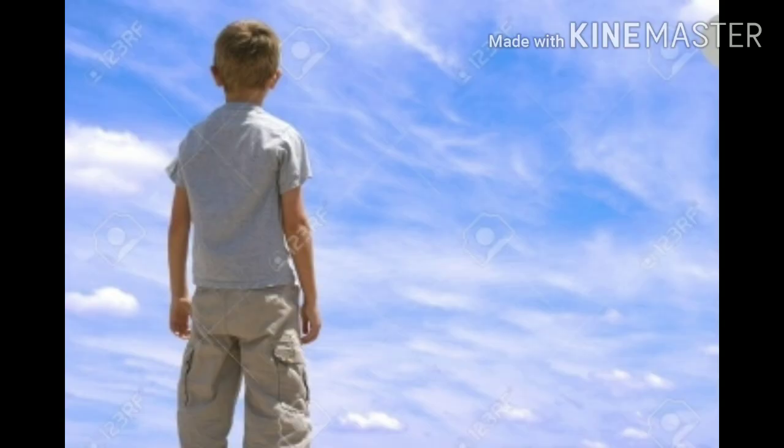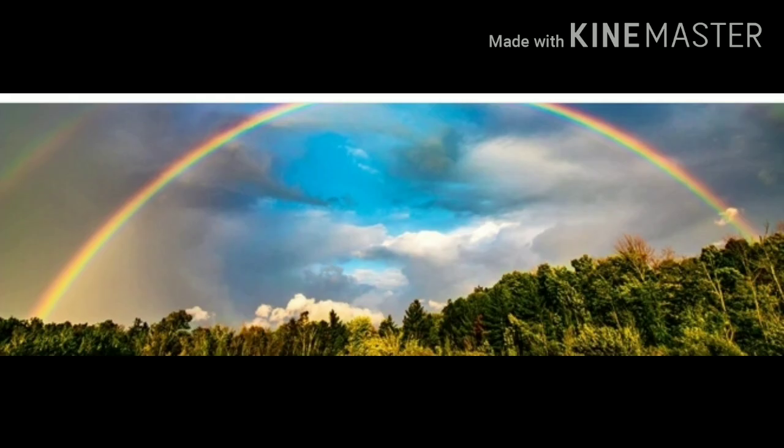Kids, you all have seen the sky blue in color. But have you ever wondered why it is blue? Because the light from the sun looks white, but it is really made up of all the colors of the rainbow.